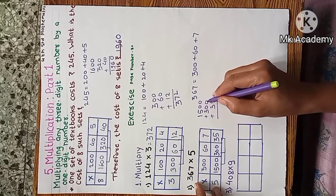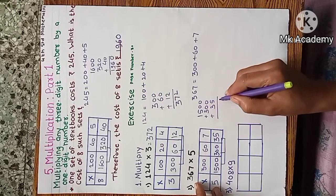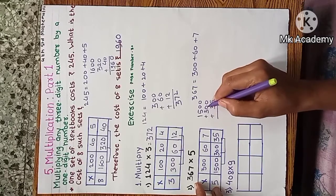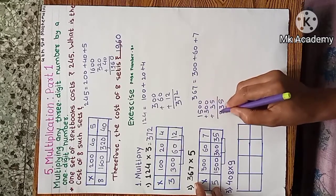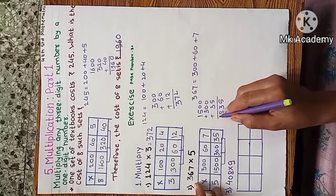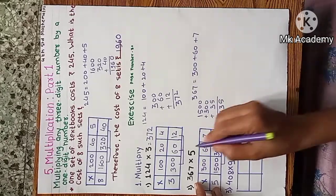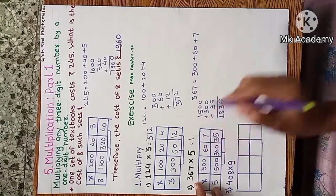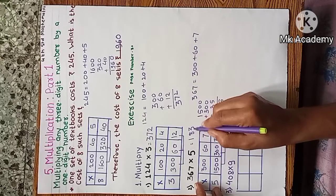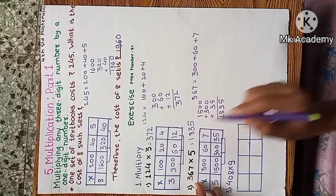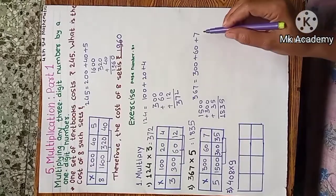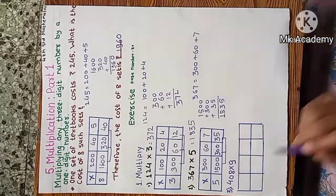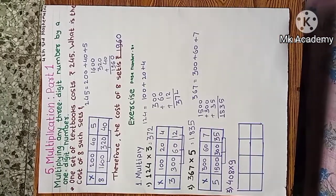0 plus 0 plus 3 is 3, 5 plus 3 is 8, and 1. The answer is 1835. In the lattice method we write the numbers in expanded form and then multiply each part by the given number, then we add all the products to get our answer.